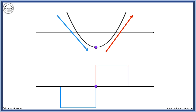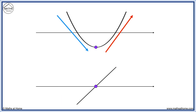We now draw the derivative through these regions. Since our original graph is a quadratic parabola, the derivative will be a straight line. We start below the axis, and on the other side of the point we go above the axis. Here is our derivative.